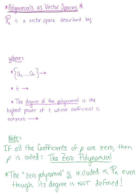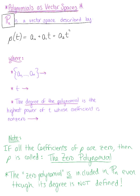We denote a polynomial here as double-barred P sub n. This is a vector space described by p of t equals a naught plus a sub 1 times t to the first, plus a sub 2 times t squared, and this continues all the way up to a sub n minus 1 times t to the n minus 1, plus a sub n times t to the n.